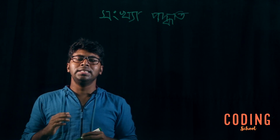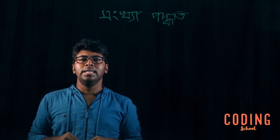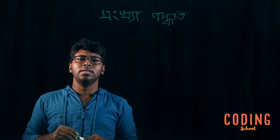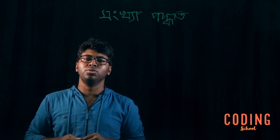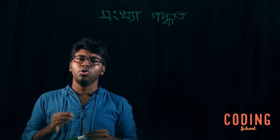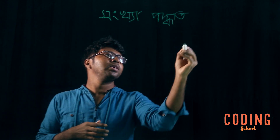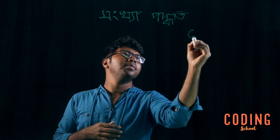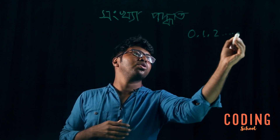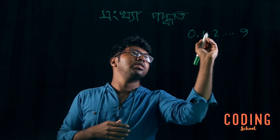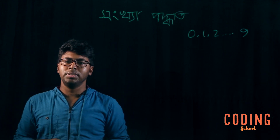We have a decimal system. The decimal number system has a base of 10. The decimal number is 10, and the decimal number is 12.